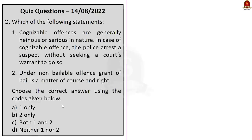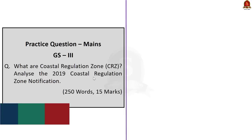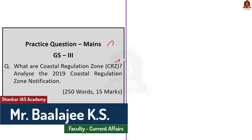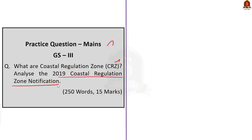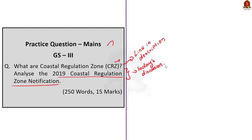Question 4 is about cognizable and non-bailable offenses — try to find the correct answer from today's discussion and post it in the comment section. The mains question for today is: What are coastal regulation zones? Analyze the 2019 Coastal Regulation Zone notification. For the first part, give a general introduction about CRZ. For the analysis part, write the advantages and issues with the 2019 notification using specific data from today's discussion rather than generic points. Post your answers in the comment section.